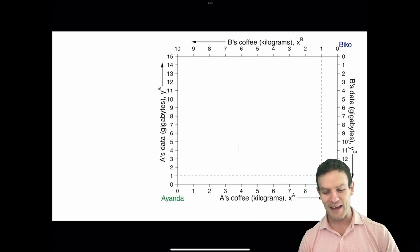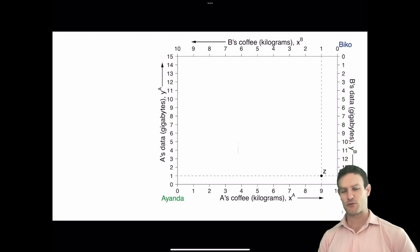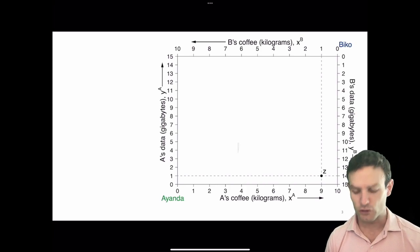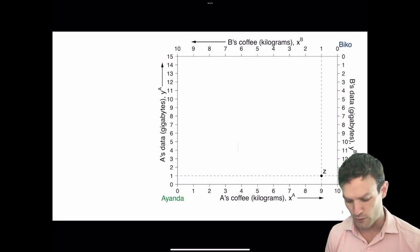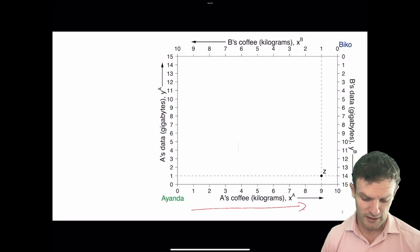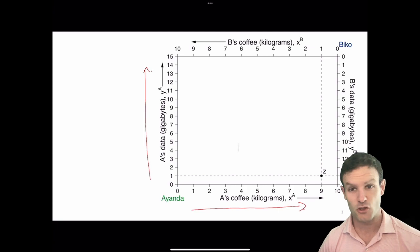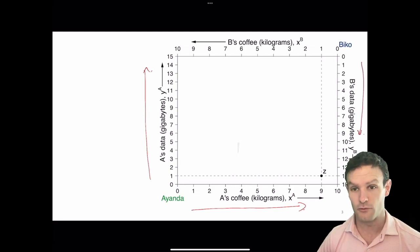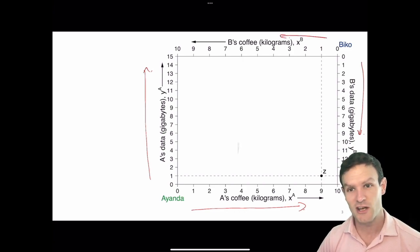In this Edgeworth box, we have a total amount of x, with xa going along the horizontal axis from left to right — that's how much of x Ianda has. Going from south to north is how much of y Ianda has. Going from top to bottom is how much of y Biko has. And going from right to left is how much of the x good Biko has.